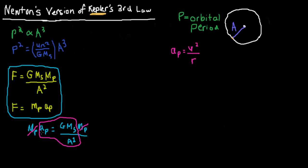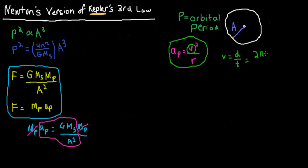We notice that AP appears on both sides of our equations, and that will be very important as we go along in this derivation. The centripetal acceleration formula is: acceleration of the planet equals V squared over R. V here is velocity — from kinematics, V equals distance over time. For a planet orbiting a star in a circular orbit, the distance covered is the circumference of a circle, 2πR, and the time T is the orbital period P.